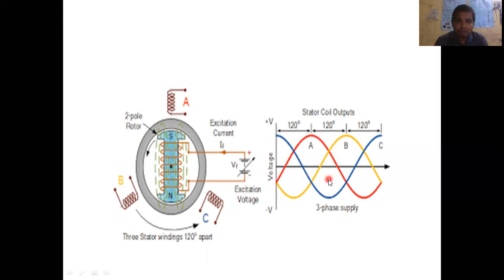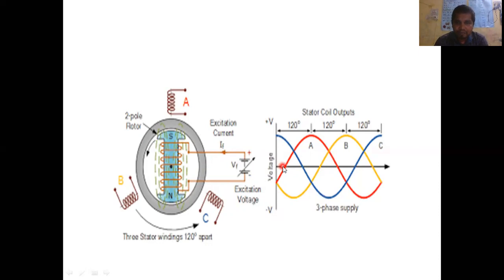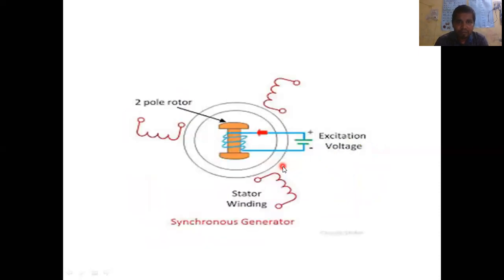We need not go in depth on this because you have already studied these in Machines 1 and 2. This is a simple representation of the three-phase alternator which produces three-phase supply.